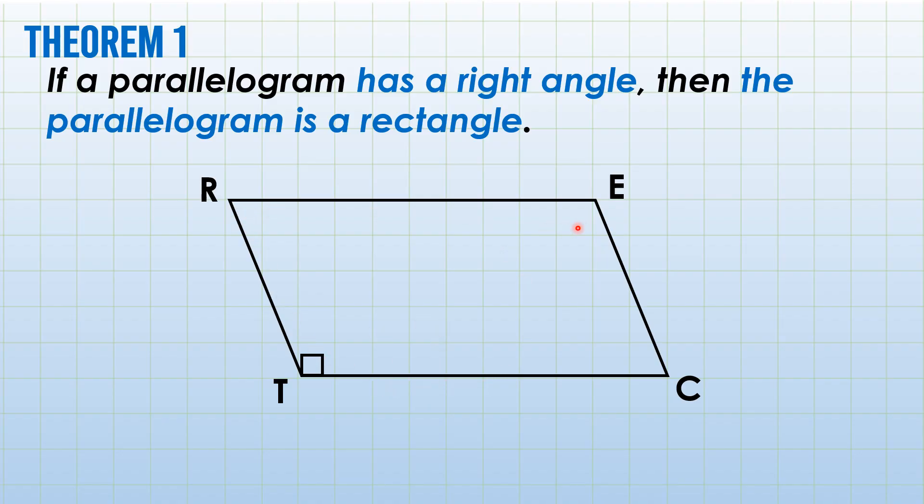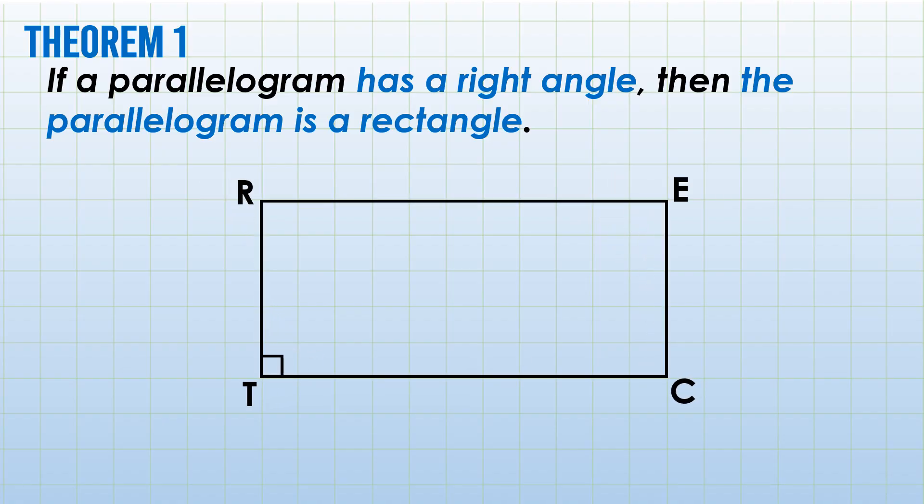How does this work? Angles R, E, and C will be forced to adjust. Let's look at the figure. To explain further, since this is a 90 degree angle and this is a parallelogram, we can apply the properties of parallelograms. Property number 2 says opposite angles are congruent. If this is 90 degrees, angle E is also 90 degrees. And angle R and angle T are supplementary angles because they are consecutive angles, right? So if this is 90, that is also 90 degrees.